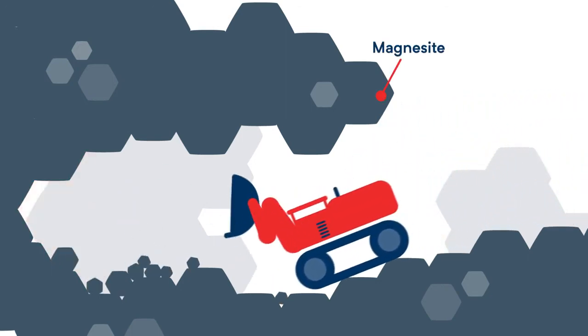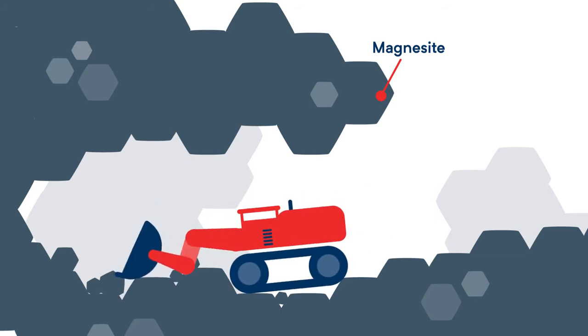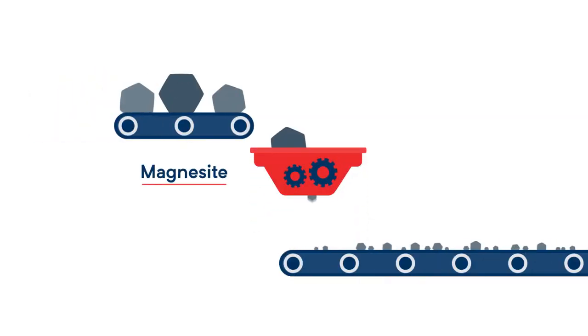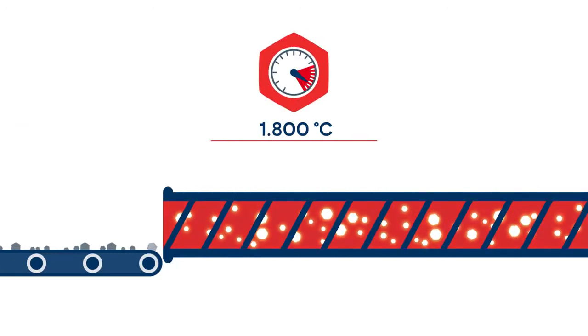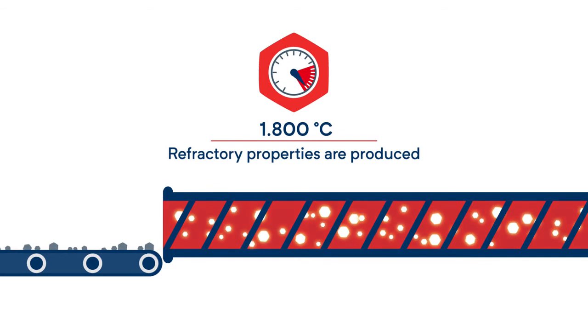including magnesite, which can be mined above and below ground. The magnesite is crushed and then burned in special kilns at a temperature of 1800 degrees Celsius, which produces the refractory properties.